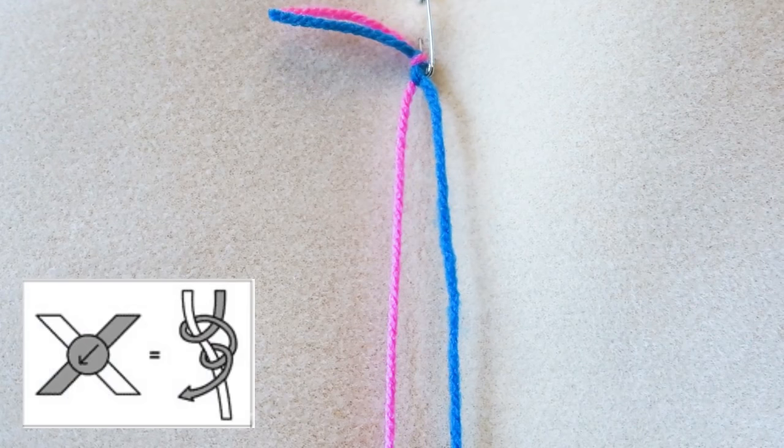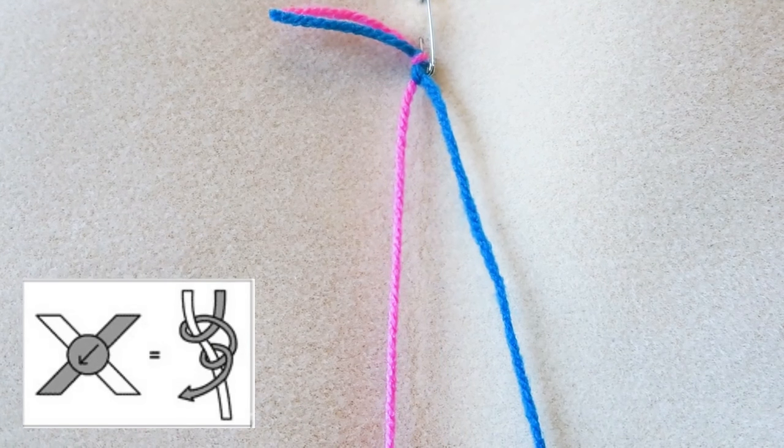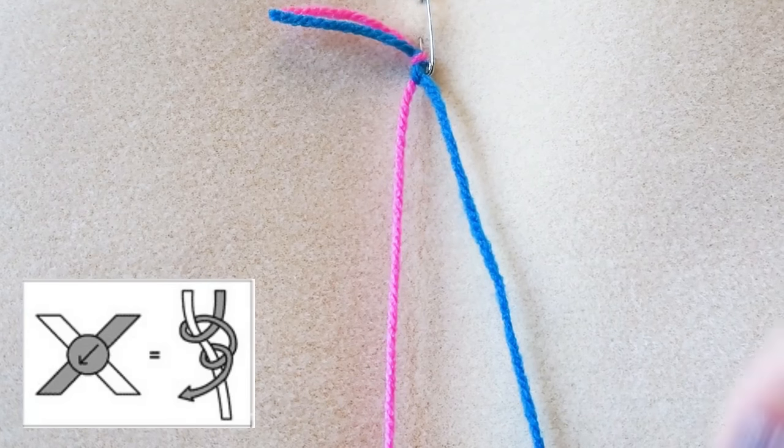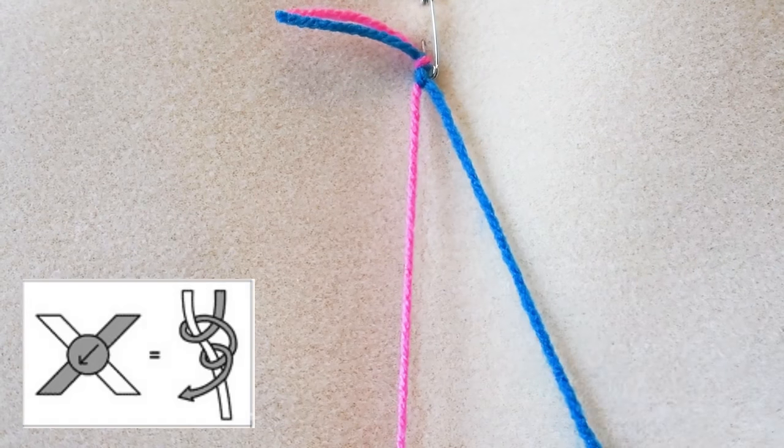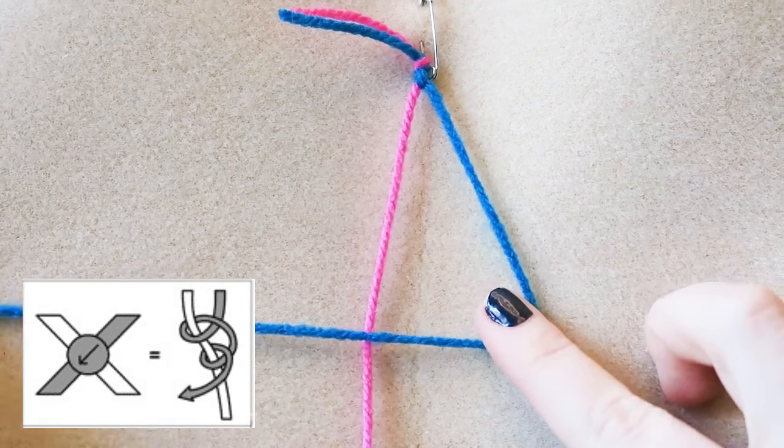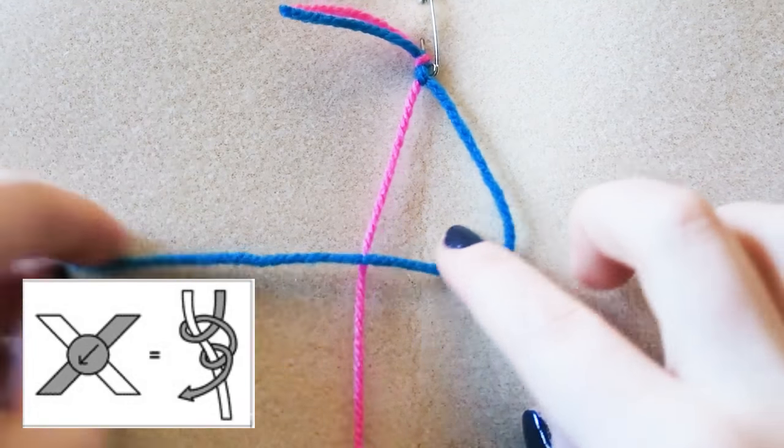Now I'm going to show you how to do a backwards knot. This is a knot which travels to the left of the work. So we are going to be taking the right thread this time instead of the left. We're taking the right, and we're going to be making a backwards four shape like so.